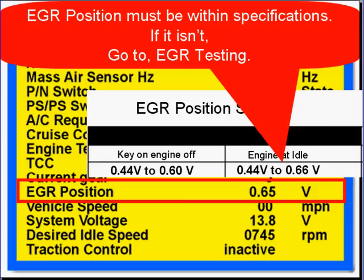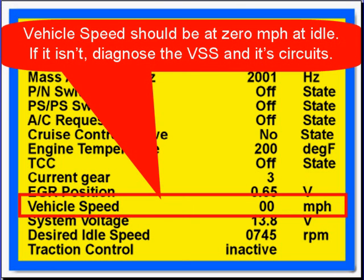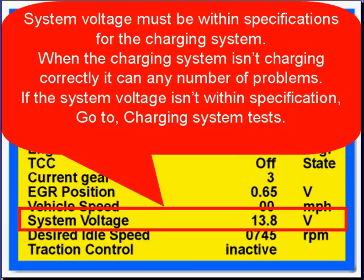Do not forget to look at this data — a leaking EGR is a very common problem concerning idle issues. Vehicle speed should be at 0 miles per hour at idle; if it isn't, diagnose the vehicle speed sensor and its circuits. System voltage must be within specifications for the charging system. When the charging system isn't charging correctly, it can cause a number of problems including idle problems. If system voltage isn't within specifications, go to charging system test.